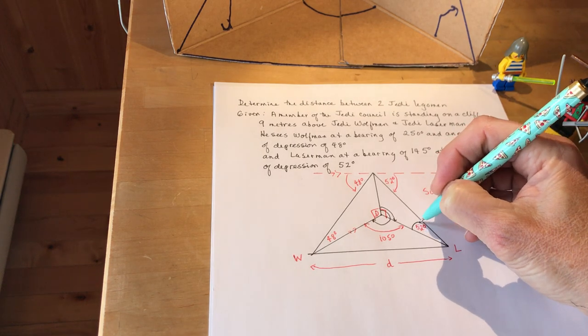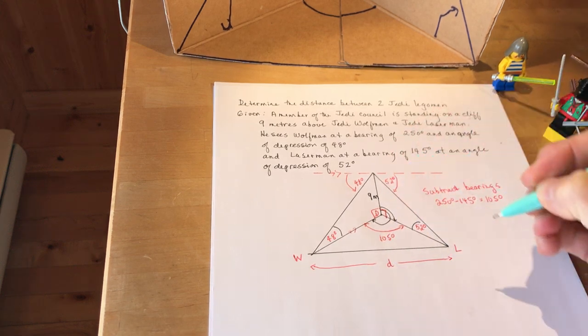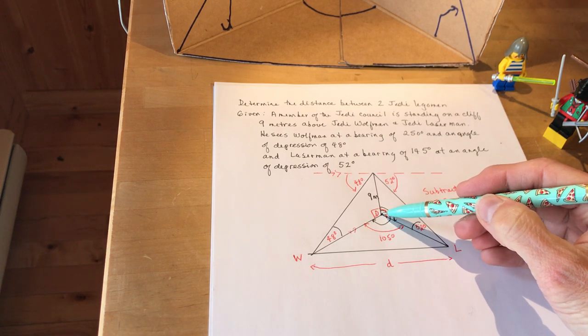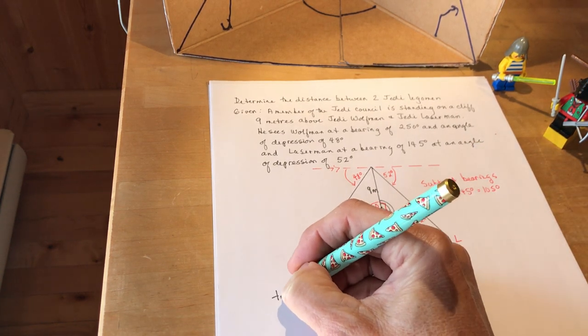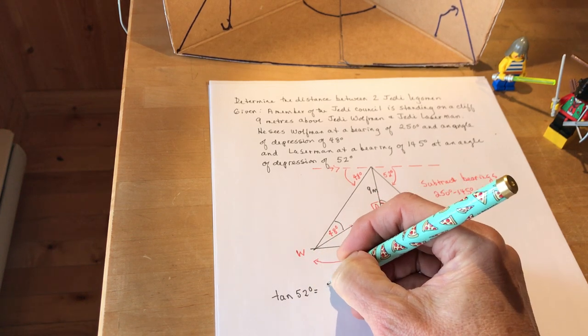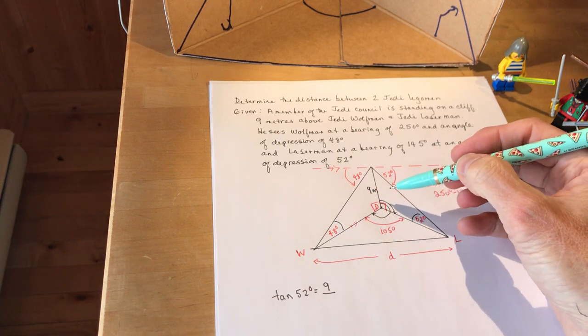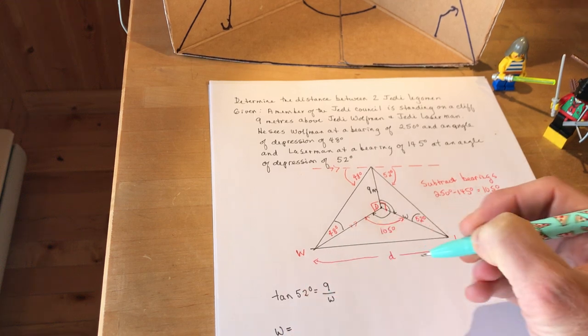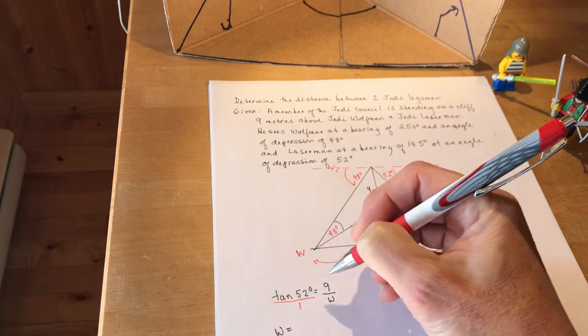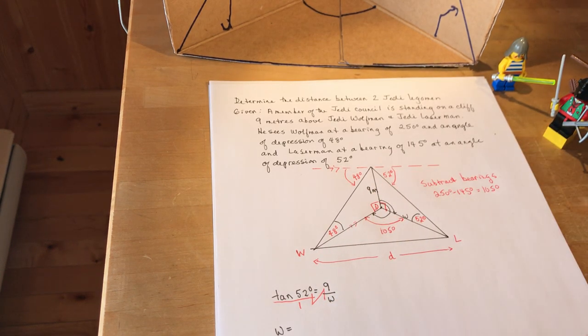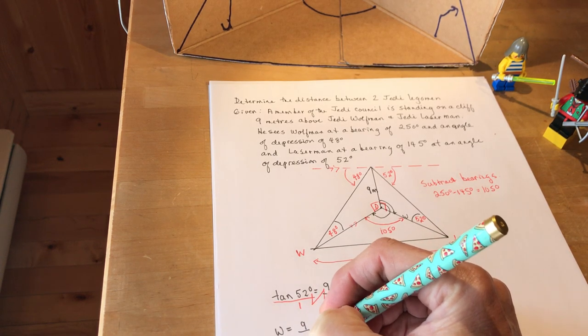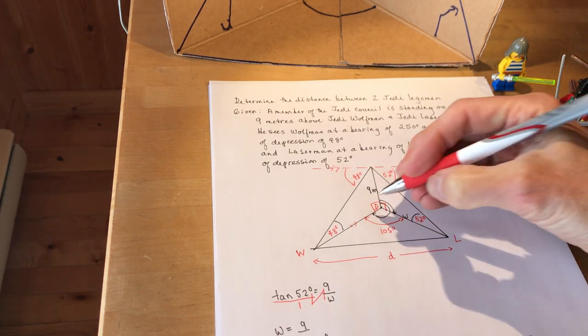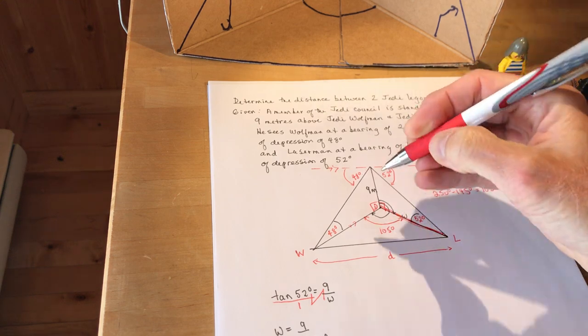Once you have those two angles and you have the height of nine meters it's very easy for you to calculate the length of WD and LD. So I'm going to calculate those first. So I have the tan of 52 degrees is equal to nine over W. So W is equal to now be careful with these ones because this is where you have the W in the denominator. So it's nine times one divided by the tan of 52. So nine divided by tan 52 degrees and that comes out to about 7.03. Now I do the same thing on the other side. So I found this side length here now.